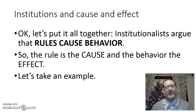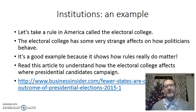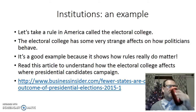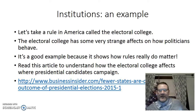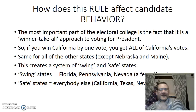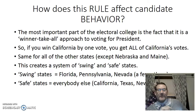Institutionalists look at rules as causing behavior — the rule is the cause and the behavior is the effect. One example: the Electoral College is how we vote for president. What's different is we don't just throw all the votes in a pile and see who has the most. Rather, we vote on a state-by-state basis, and if you win that state, you get all the votes from that state. That's a winner-take-all approach. You win California by one vote, you get all the votes in California. This creates a system of swing states and safe states.